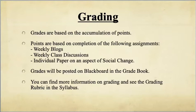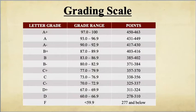The total amount of points you can earn in this class is 463. Your grades are based on the accumulation of points from weekly blogs, class discussions, and the individual paper on aspects of social change. All grades will be posted on Blackboard in a grade book. You can find more information on grading and the grading rubric in the syllabus, along with the standard grading scale showing letter grade ranges.